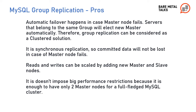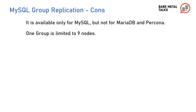Reads and writes can be scaled by adding new master and slave nodes. It doesn't impose big performance restrictions because it is enough to have only two master nodes for a full-flat MySQL cluster. Cons of MySQL Group Replication: it is available only for MySQL, but not for MariaDB and Percona. One group is limited to nine nodes.